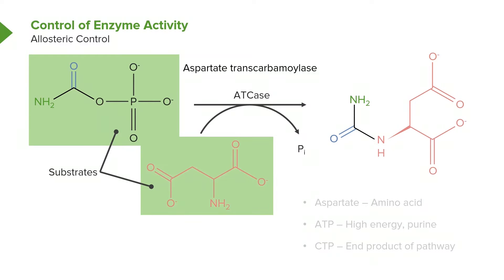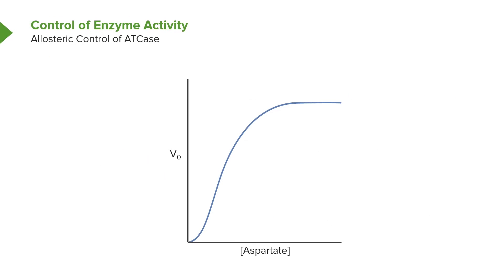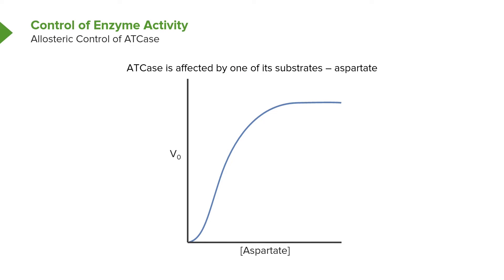Here are the substrates of the reaction and here's the enzyme catalyzing that reaction. When aspartate binds to ATCase, it changes the enzyme — specifically it changes the enzyme's affinity for additional aspartates. That's why we see the sigmoidal plot that you can see on this graph. So ATCase is affected by aspartate.